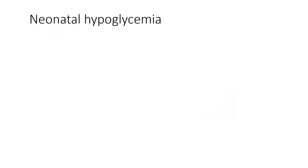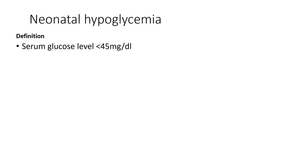Neonatal hypoglycemia is defined as serum glucose level falling below 45 mg/dL in neonates. It should be noted that in children more than 2 months old, blood sugar less than 55 mg/dL is considered hypoglycemia.